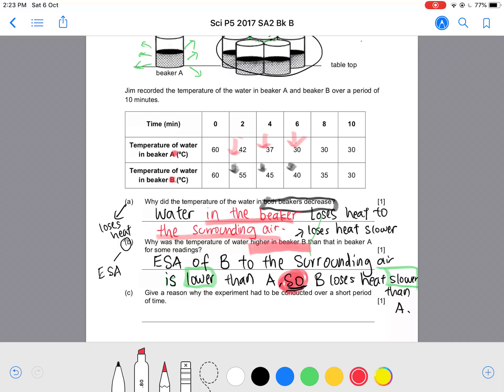Part C. Give a reason why the experiment had to be conducted over a short period of time. So in other words, why can't you drag this whole experiment to the whole day? By common sense you know that if you're going to carry out the experiment instead of 10 minutes, you're going to make it 24 hours, it's not going to be a fair experiment. Because at the end of the day anything that's hot will return back to room temperature. So what is the reason? Because eventually the water in the cup will lose heat to the surrounding, returning to room temperature. So by then if you don't measure the temperature fast enough, you only measure it 24 hours later, of course everything will be all room temperature.